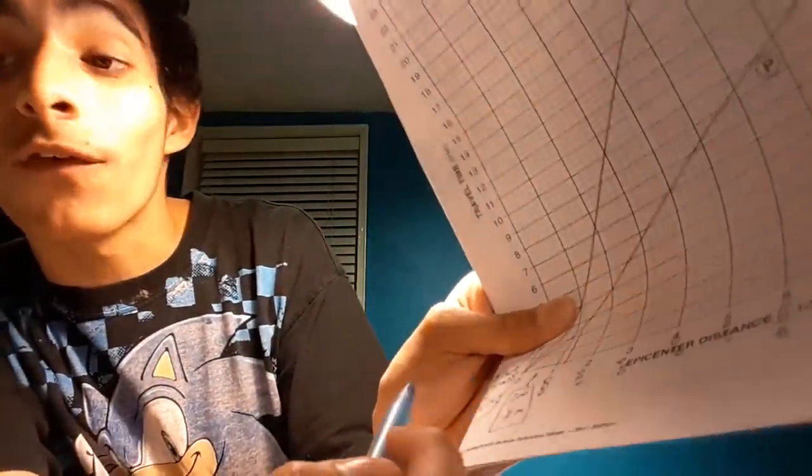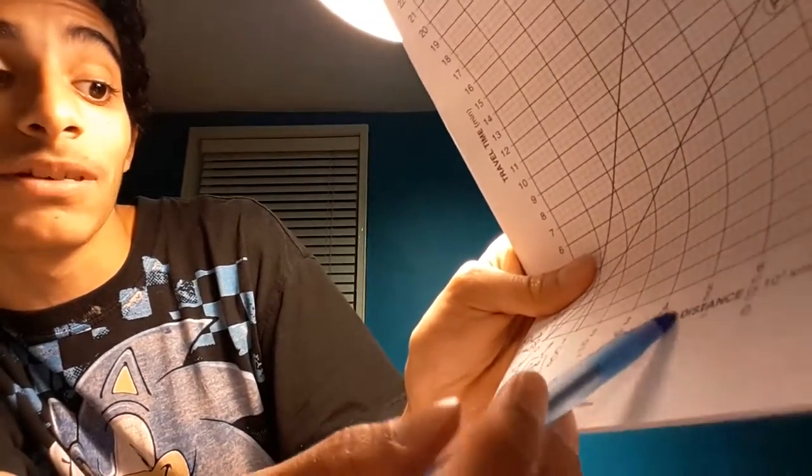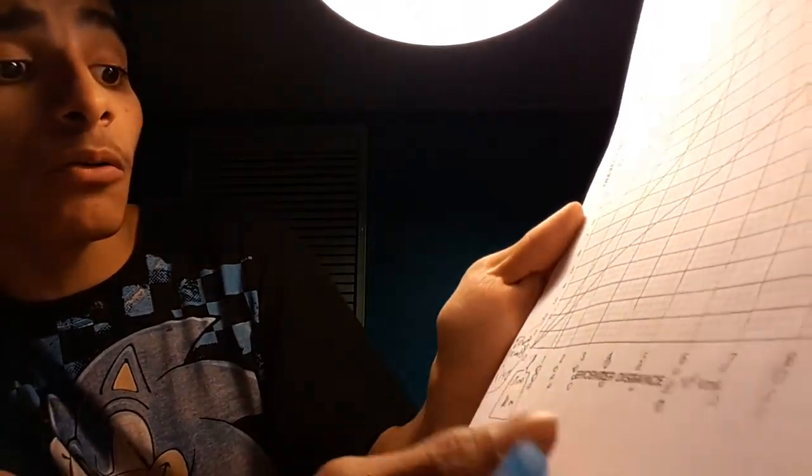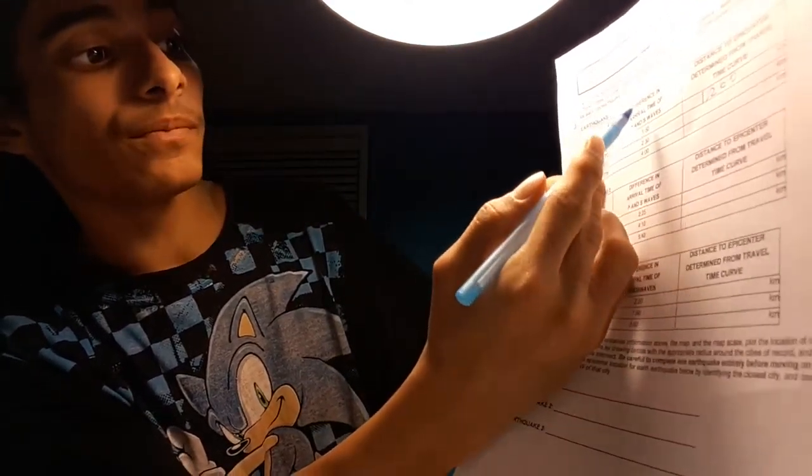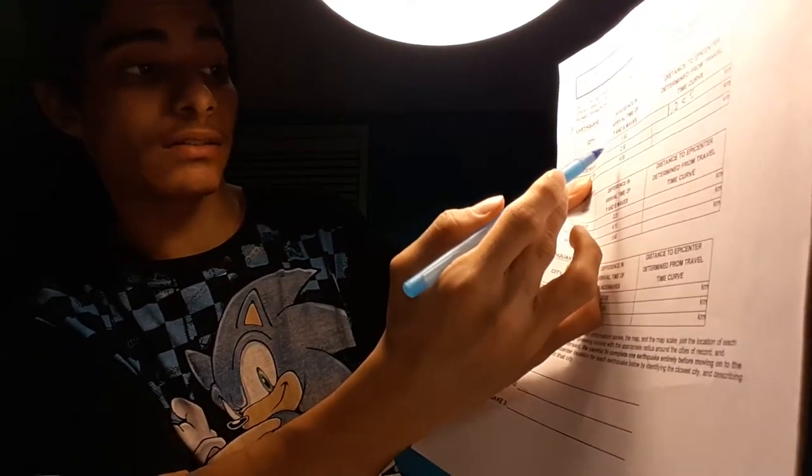If I was you as a student, I would write 200 kilometers for the epicenter for each line, and I would always put 20 seconds for each minute. Let's get this process started. City Denver: the difference in arrival time of P waves and S waves is 2 minutes and 30 seconds. We're going to use a scrap piece of paper.